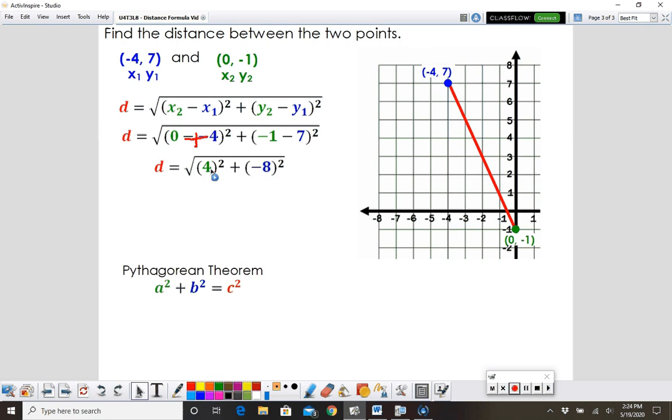4 squared is going to be 16, negative 8 squared is going to be 64. And when we add those together, we get the square root of 80.